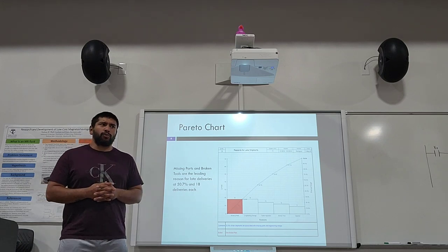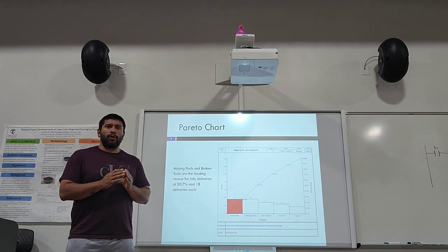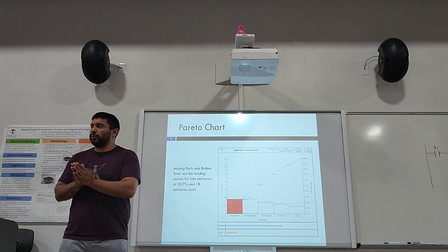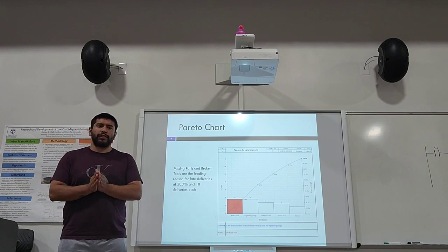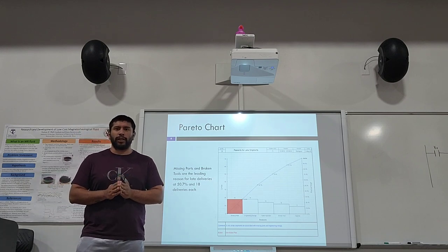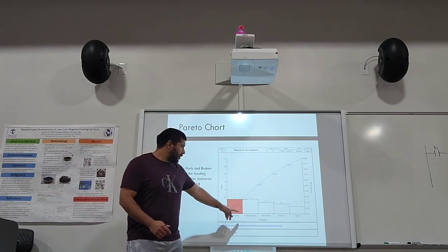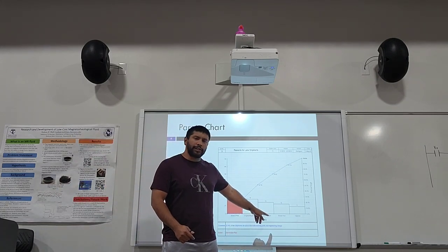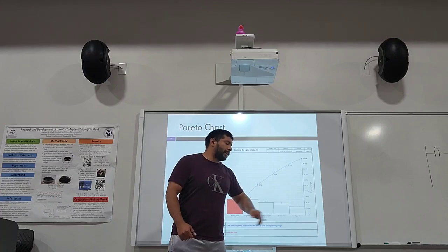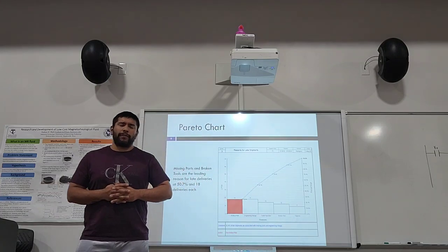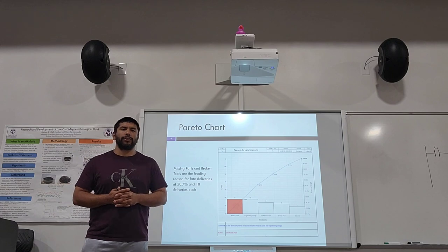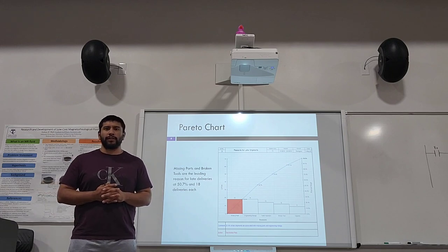The Pareto chart here is breaking down more and looking into detail as to the reasons why these deliveries were late to begin with. Missing parts and engineering change, failed inspection, broken tool, and capacity are the top five main reasons for late deliveries for this company.